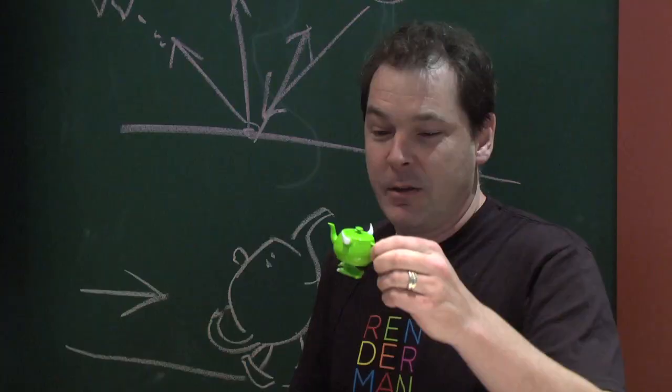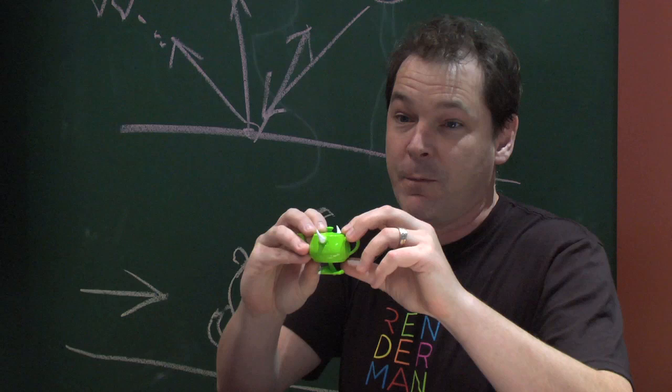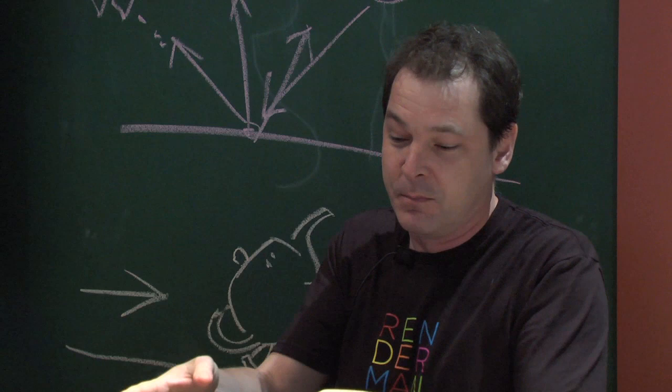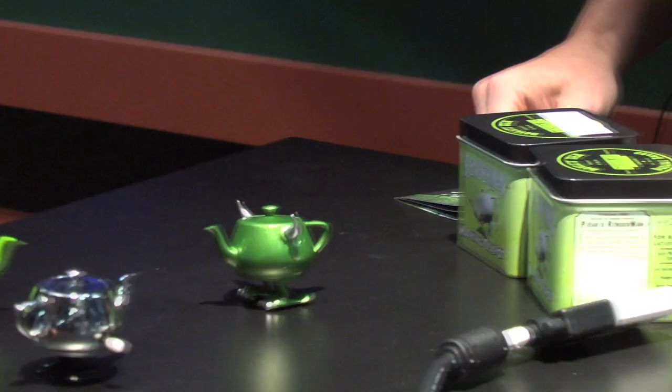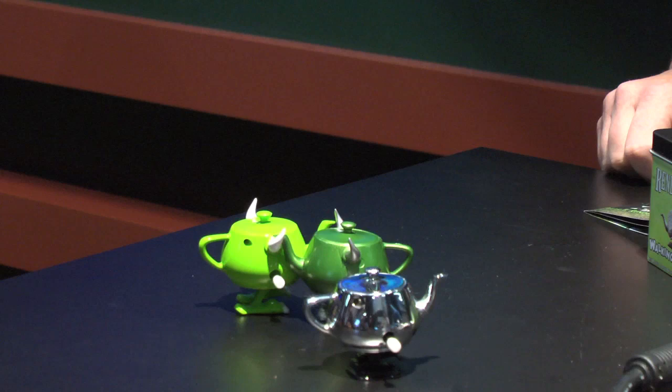The teapot itself is the Utah teapot. It was modeled by Martin Newell in 1974 through a command line system, before they had modeling programs. Once they had the teapot, they could try out lots of shaders on it. It's part of every computer graphics program. In RenderMan, there is an RI teapot easter egg primitive, so you can actually create a teapot in RenderMan just with a geometric primitive.